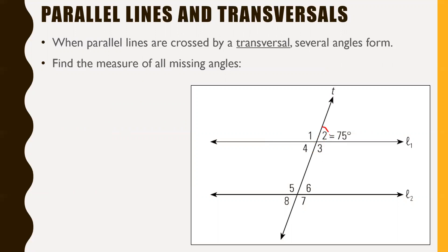When they're supplementary, that means they're going to add up to 180 degrees, because this is a straight line and a straight line has an angle of 180 degrees. So this piece being 75 means it needs to add to this piece to make 180. Angle one is going to be 180 minus 75, which gives us 105 degrees.